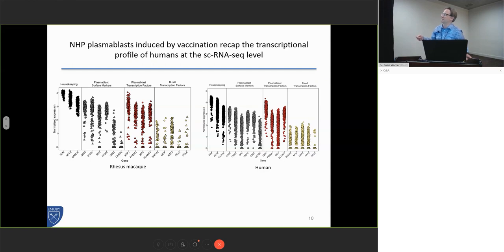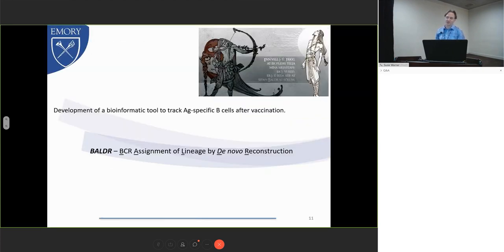We compared plasmablasts after BG505 SOSIP vaccination to those induced by flu vaccines in humans, and we found that these cells were really recapitulating most of the features that we see in human cells, particularly the expression of the lineage-defining transcription factors and the cell surface expression. We had resolution to really finely tune and get into B cell biology even in very closely related subsets.